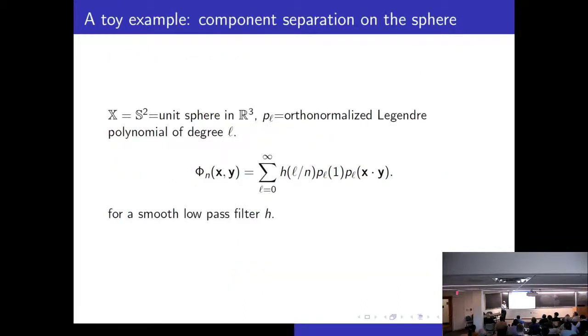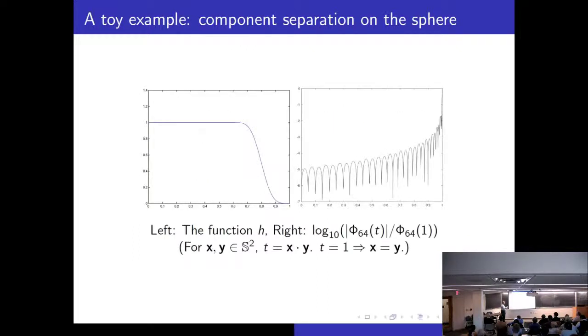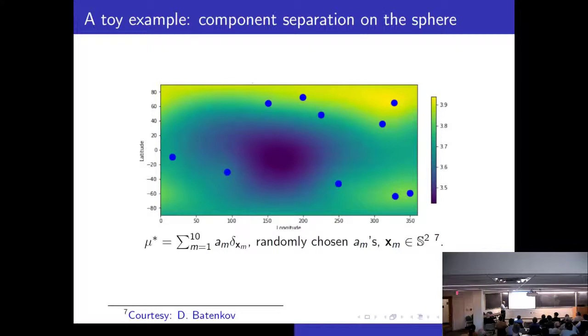And then there is a reality check. I asked a young postdoc called Dima Batenkov to try this for me. So we are talking about the sphere now as my space. The corresponding orthonormalized system is denoted by P sub L. And this is my localized kernel. So the filter looks like this. It's one up to half and then decreases smoothly to zero. And here is a localization of the kernel. If x is equal to y then t is 1. So you see that this is normalized to be 1 at t equal to 1. But very fast it is decreasing to one hundredth of this strength. So it's a highly localized kernel.